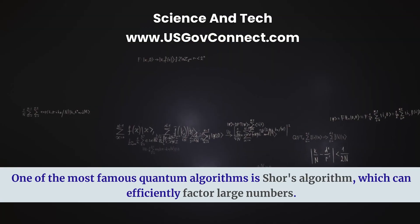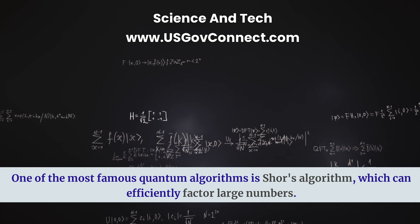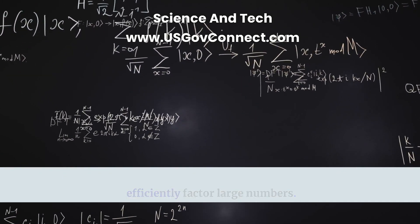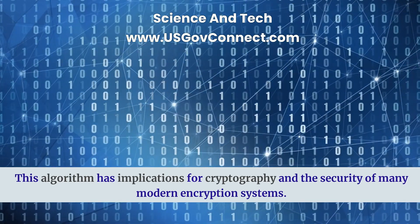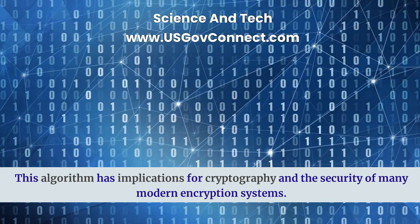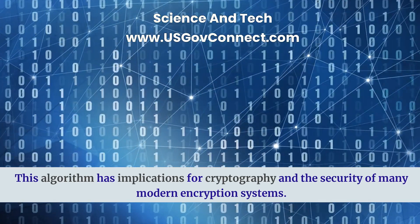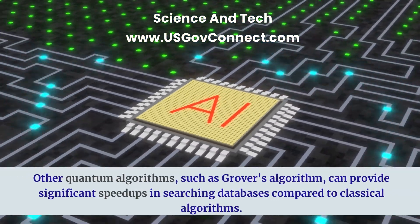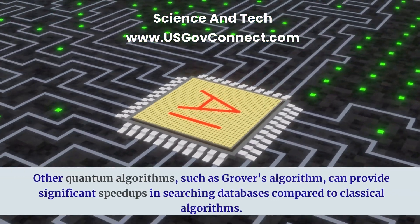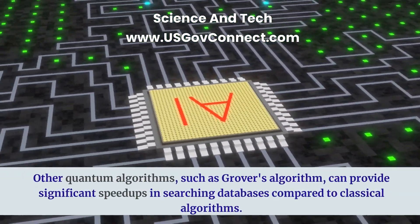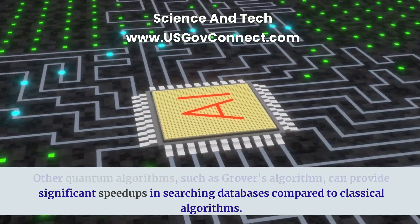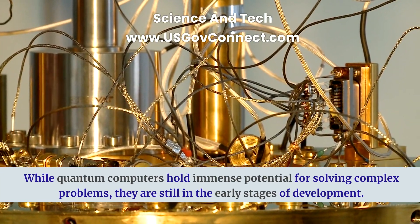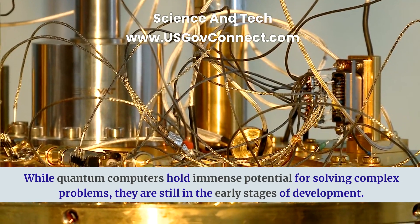One of the most famous quantum algorithms is Shor's algorithm, which can efficiently factor large numbers. This algorithm has implications for cryptography and the security of many modern encryption systems. Other quantum algorithms, such as Grover's algorithm, can provide significant speed-ups in searching databases compared to classical algorithms.